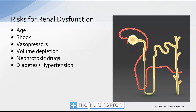Age: the very young and the very old have less control over their immune response and inflammation, and they can tend to develop more renal dysfunction. Shock can obviously cause damage to the nephron and the glomerulus. Vasopressors cause vasoconstriction, decreasing perfusion not only to other organs but also to the kidneys. Volume depletion and nephrotoxic drugs can both cause damage directly to the nephron. And then we have diabetes and hypertension — long-term uncontrolled diabetes and hypertension can scar the tissue in the kidney and cause renal dysfunction and renal failure.